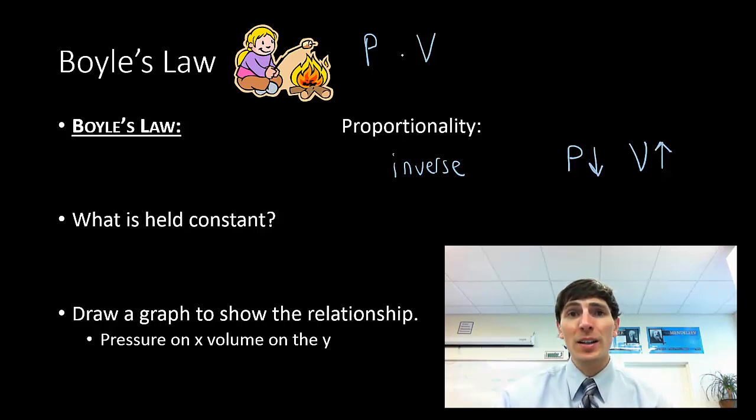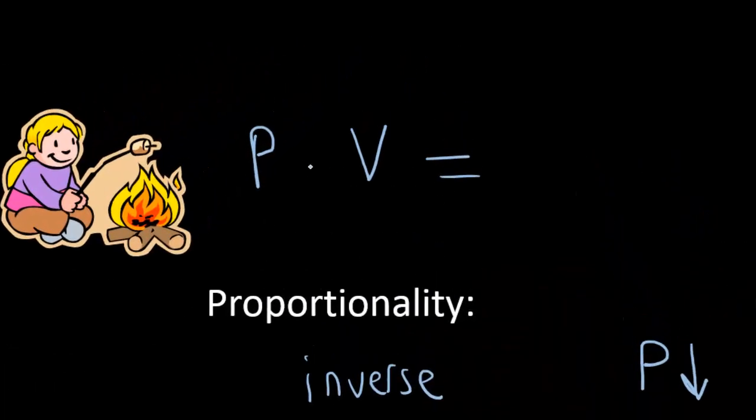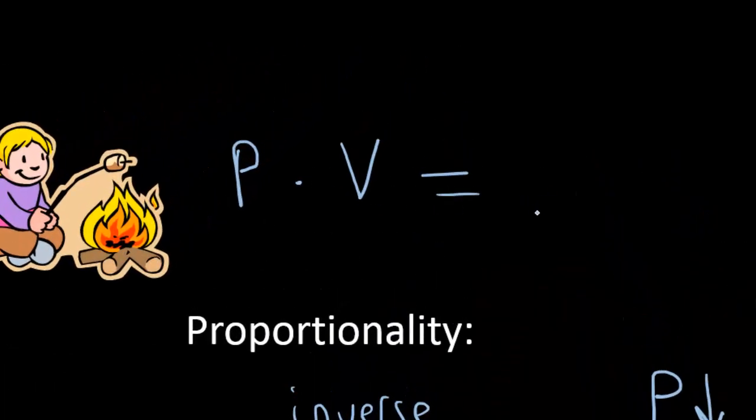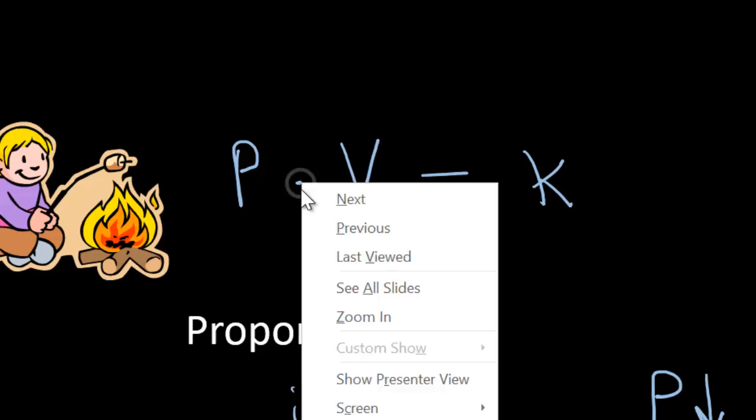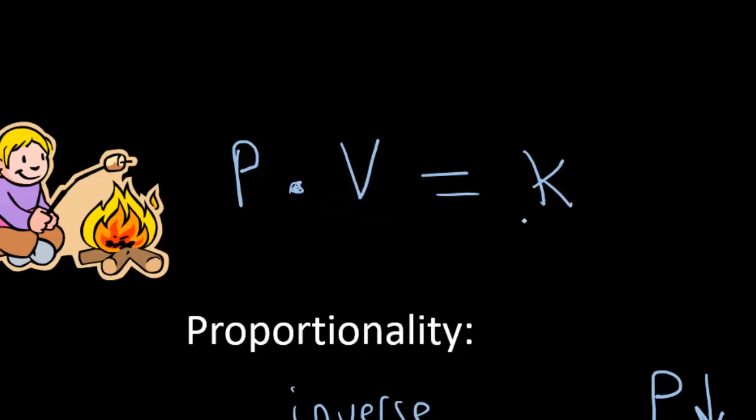Boyle did some experiments quantitatively looking at these two variables, and he noticed that whenever he multiplied those two, pressure times volume, it didn't matter what pressure or volume he had, he always got the same constant number when he took the product of those two things. If K was 100, and my pressure was 10, and my volume was 10, they always equaled 100. If pressure went up to 100, volume would have to go down proportionally to still equal that same number, 100.